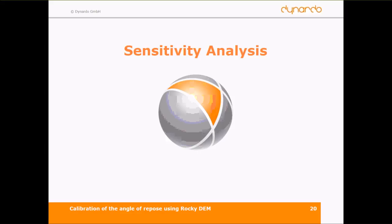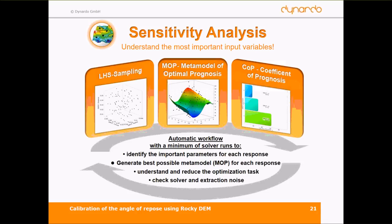The sensitivity analysis: we want to understand the most important input variables. The steps are: start with a design of experiment, maybe Latin hypercube sampling, run the CAE process for all design points, calculate the metamodel of optimal prognosis which represents each output well, then check the coefficient of prognosis to see which input parameter has influence on which output. We want to understand and reduce the optimization task, and see whether there is any solver noise or extraction noise in our outputs.